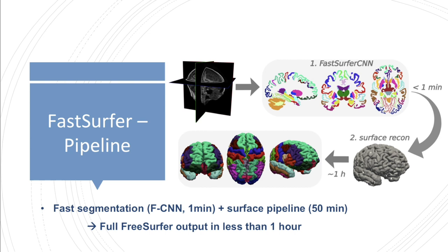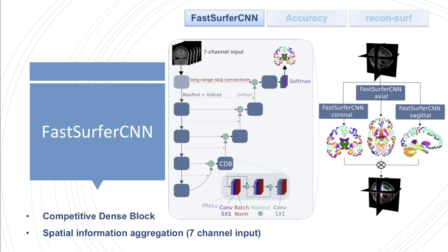Building upon this high quality segmentation, we generate a full FreeSurfer output including cortical surface reconstruction, mapping of cortical labels, and traditional pointwise and areal thickness analysis in approximately 60 minutes. FastSurfer CNN is composed of three fully convolutional neural networks operating on coronal, axial, and sagittal 2D slice stacks and a final view aggregation stage.